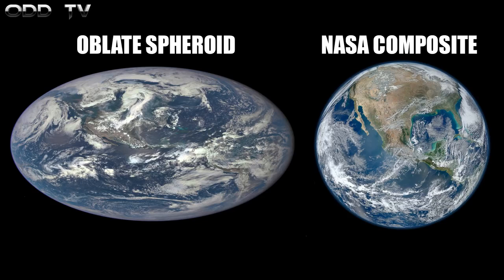Speaking of oblate spheroids and perfect spheres, both of them would have detectable curvature, right? Well, it's not showing up for anyone who tries to find it.